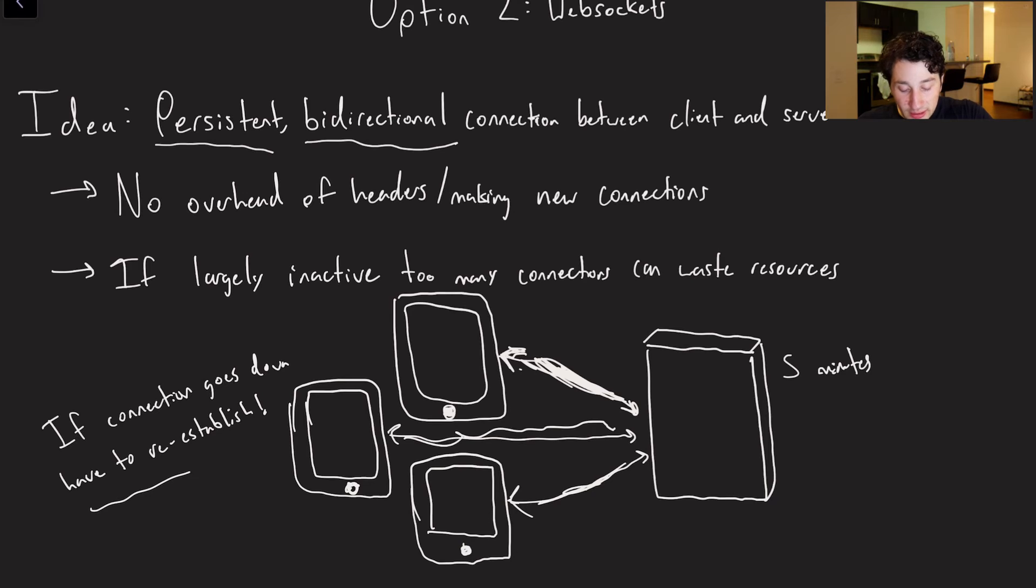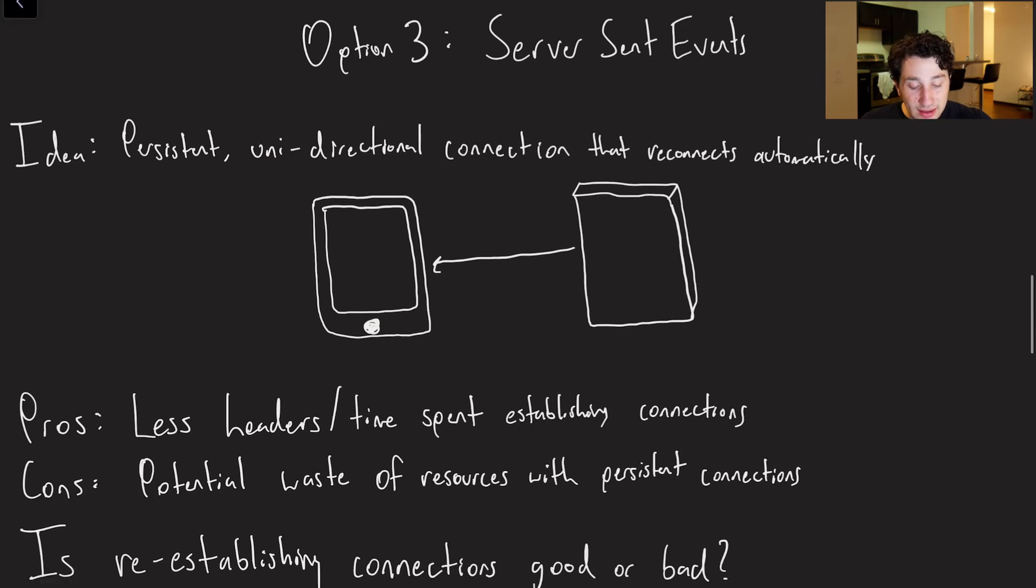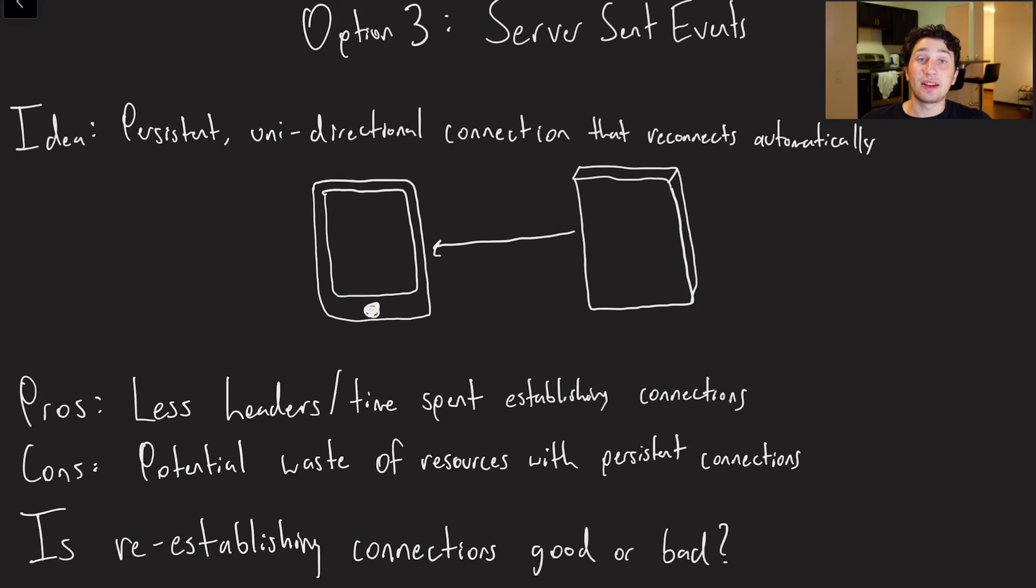Well, it means basically now that we are persisting this connection between all three of these devices and the server that entire time, and that can just waste a bunch of resources. There's no reason to necessarily persist these connections if we're very rarely sending information. Additionally, it is worth noting that if the connection goes down, if this guy gets broken for some reason, we have some sort of network partition, then WebSockets is not going to reestablish that for us. We're going to have to add some extra client-side logic to put it back together. And the only reason I mention that now is because in option three, this is actually fixed for us.